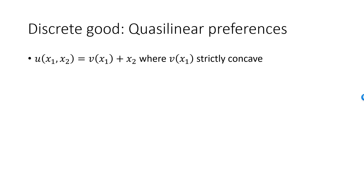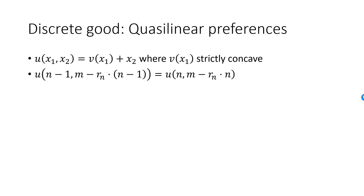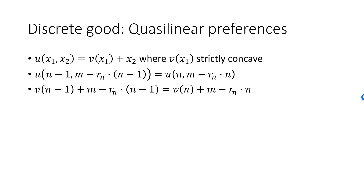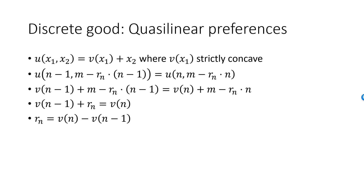Let's look again at the restriction on the utility function we found by realizing that we are indifferent between two bundles when the price equals one of the reservation prices. When P1 is equal to reservation price Rn, the utility of consuming n-1 units of good 1 must equal the utility of consuming n units. With the utility function V(X1) plus X2, the left-hand side simplifies to V(n-1) plus m minus Rn times (n-1), and the right-hand side to V(n) plus m minus Rn times n. We can cancel m and Rn times n on both sides, giving us Rn is equal to V(n) minus V(n-1).